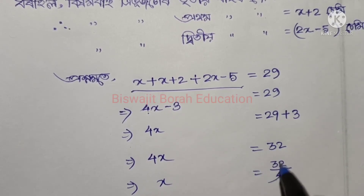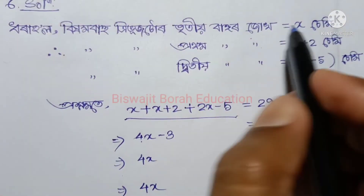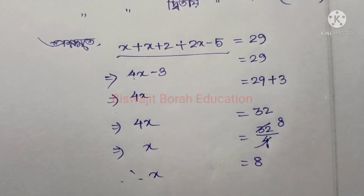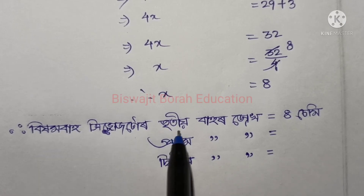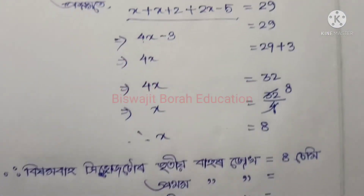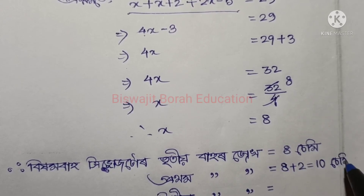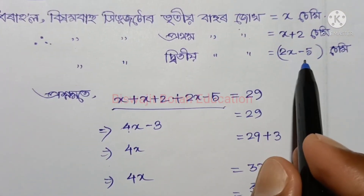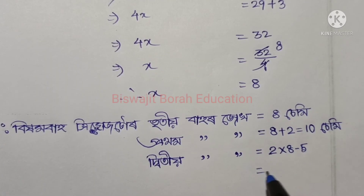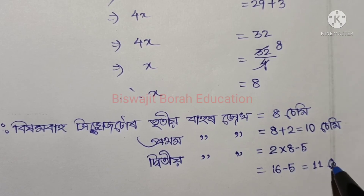So x equals 8. Confirming x equals 8, which means the side length is 8. Working through: x equals 8, and from the earlier expression, 2x equals 6, and the side value comes to 11 cm.